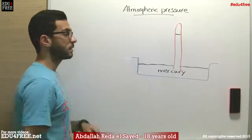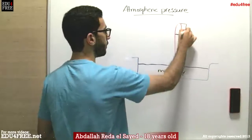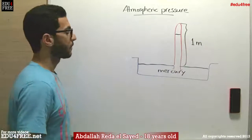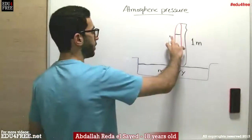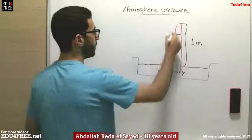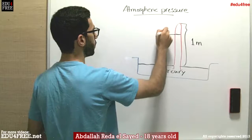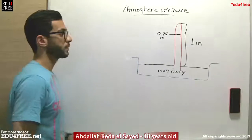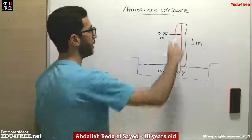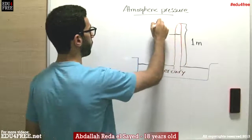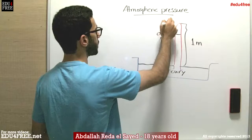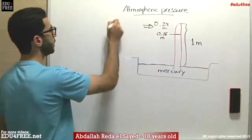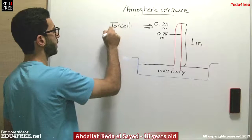It is to be noted that the total length of the tube is 1 meter. He measured the height of mercury in the tube and found it was 76 centimeters, or 0.76 meters. Therefore, the vacuum space at the top was 24 centimeters. This vacuum is called the Torricelli vacuum.